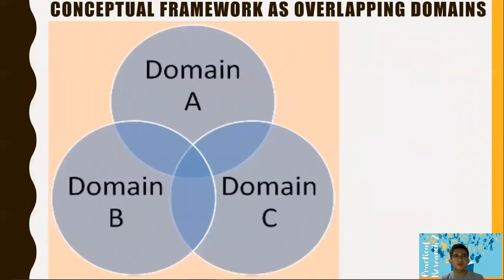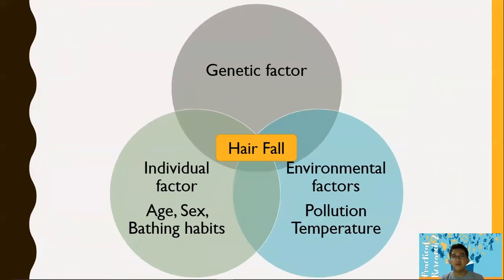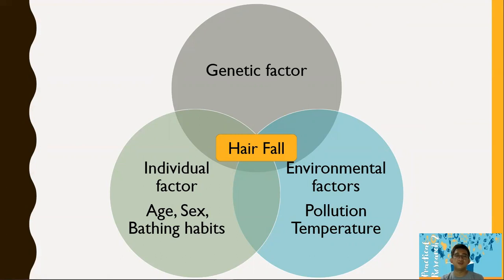Another form of conceptual framework is the overlapping domain — a Venn diagram, specifically a triple Venn diagram. For example, the main concept is hair fall, and it has sub-domains: genetic factors, environmental factors, and individual factors. These overlapping domains show how hair fall can be considered based on this concept map.